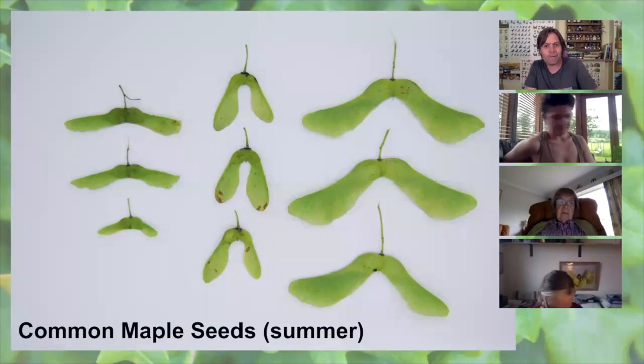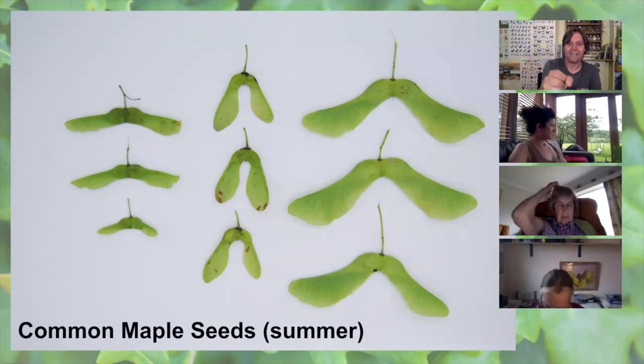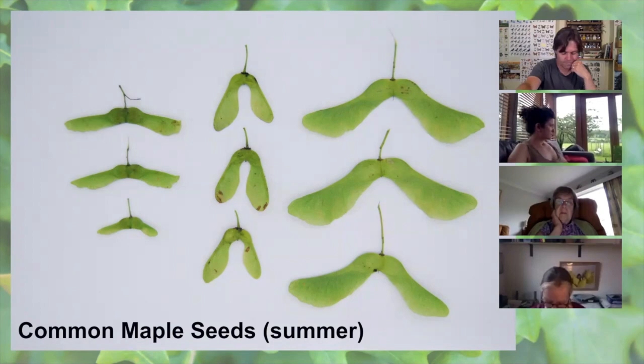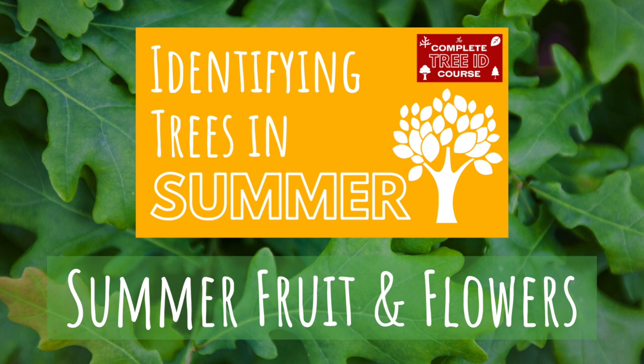The helicopters also differ in size. Here they are side by side: field maple on the left, sycamore in the middle, and Norway maple on the right. Look how much bigger the Norway maple helicopters are compared to the others — they're massive in comparison. That's a really good comparison between the three.